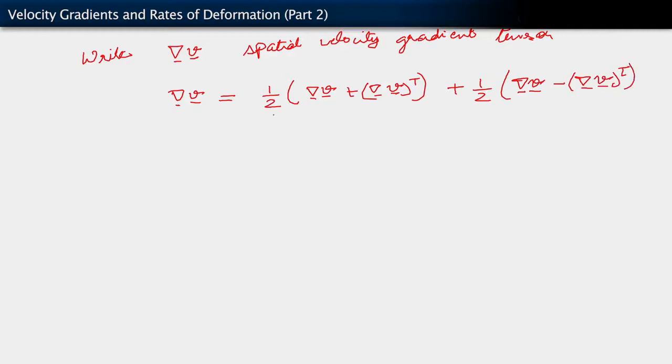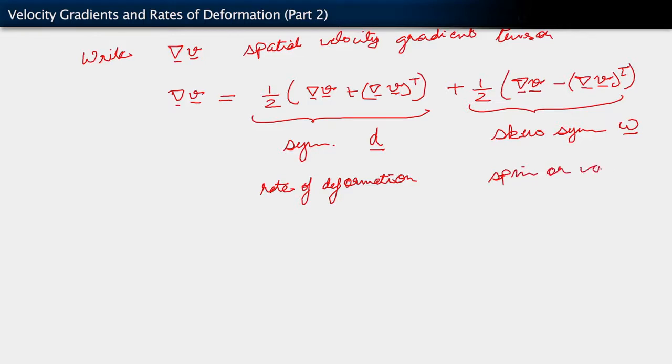This is symmetric and is denoted as D. This symmetric tensor is called the rate of deformation. And this tensor is skew symmetric. It's commonly denoted as ω. It is called either the spin or vorticity tensor.